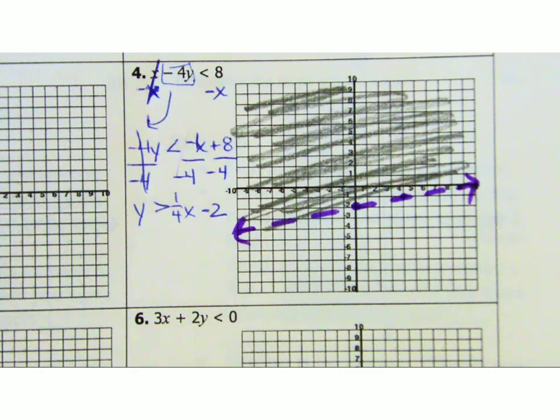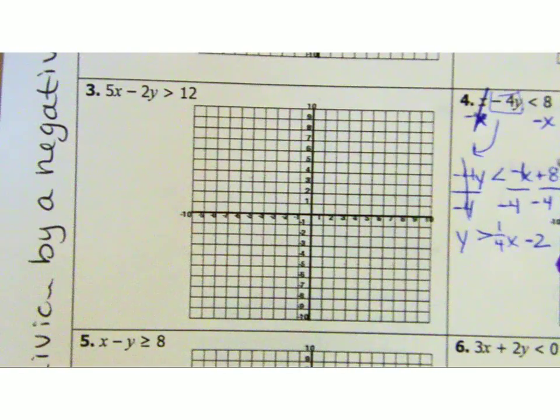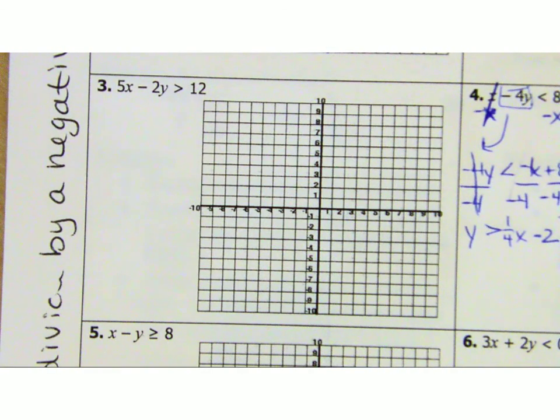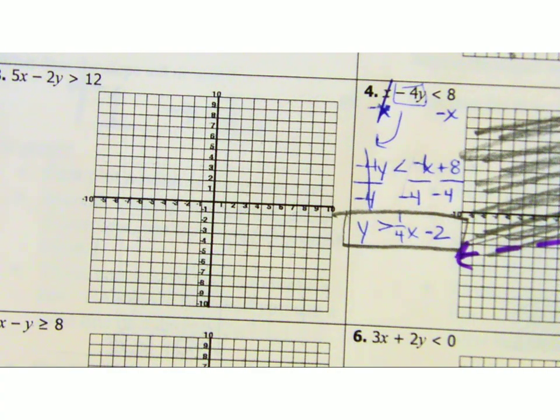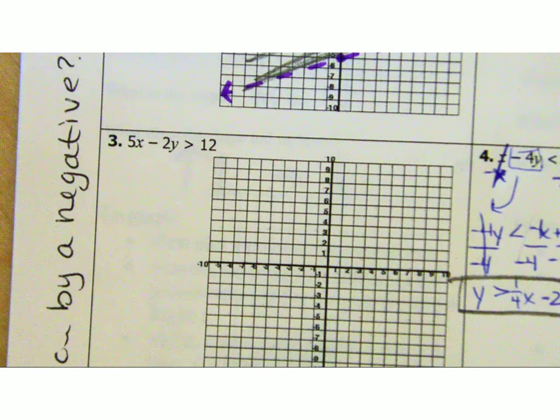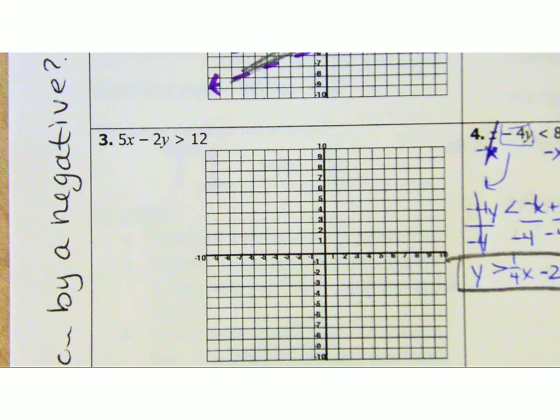Try number three. Actually, what I want you to do is just try to solve number three for Y first. Don't graph it until you have confirmed with me that you have, in fact, solved it correctly. Because if you solve it incorrectly, you're going to be guaranteed to not be able to graph it right. So solve it correctly for me first.